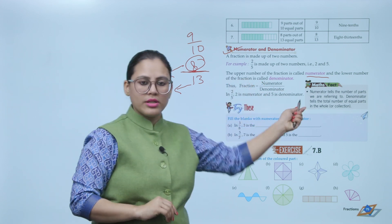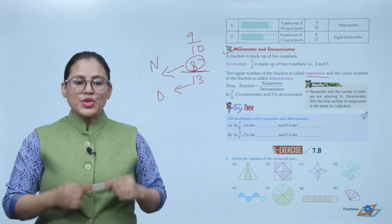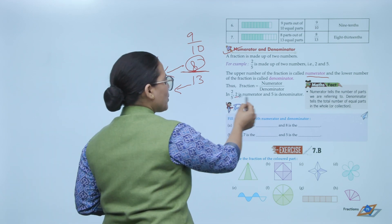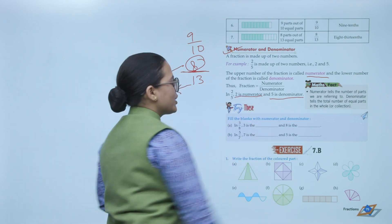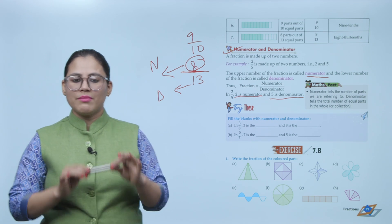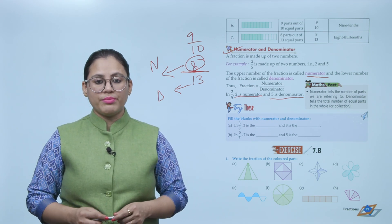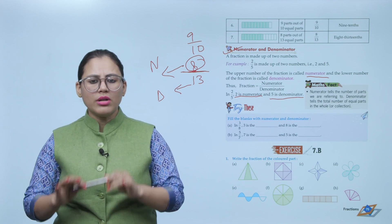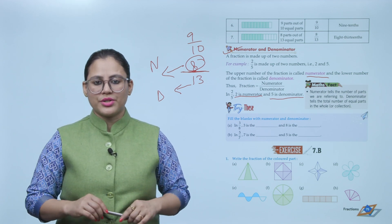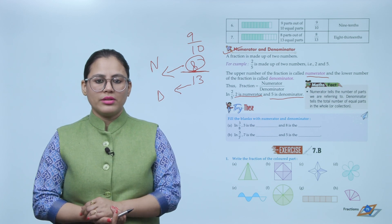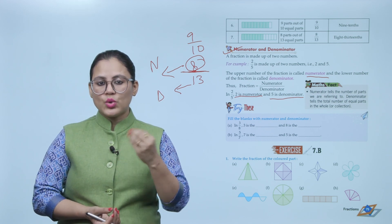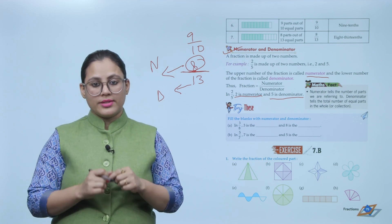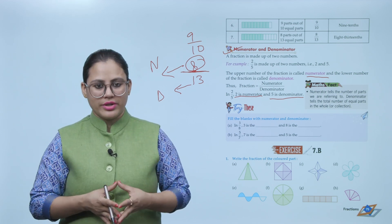A fraction is always written as numerator upon denominator. In 2 by 5, 2 is the numerator and 5 is the denominator. Maths fact: the numerator tells the number of parts we are referring to, and the denominator tells the total number of equal parts in the whole or collection.